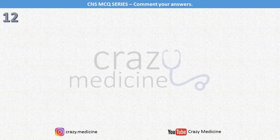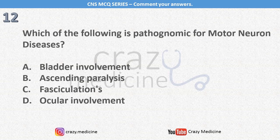And the last MCQ for this video: which of the following is pathognomonic of motor neuron disease? Options are bladder involvement, ascending paralysis, fasciculations, and ocular involvement.